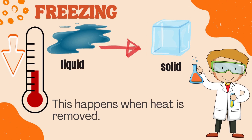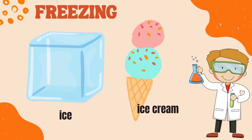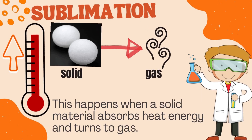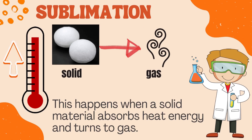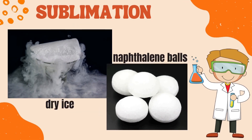Freezing turns liquid to solid. This happens when heat is removed. Examples are ice and ice cream. Sublimation turns solid to gas. This happens when a solid material absorbs heat energy and turns to gas. Examples are dry ice and naphthalene balls.